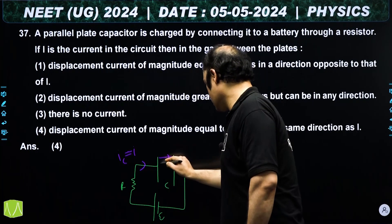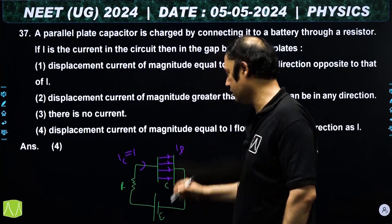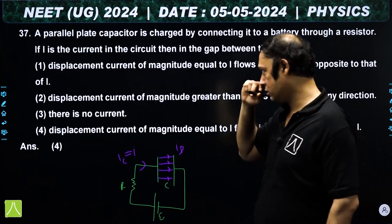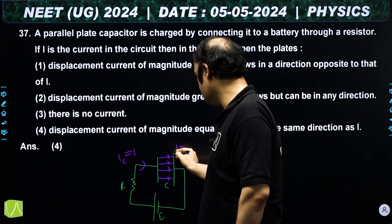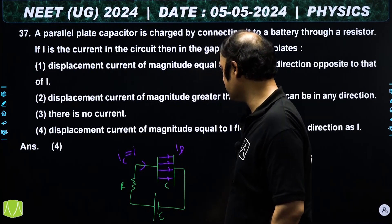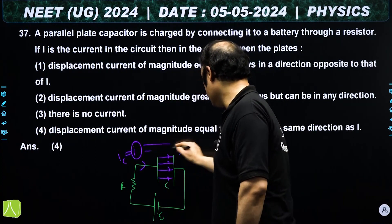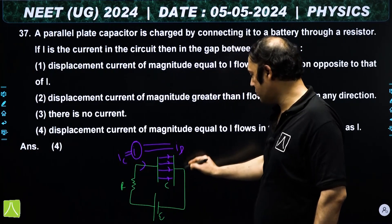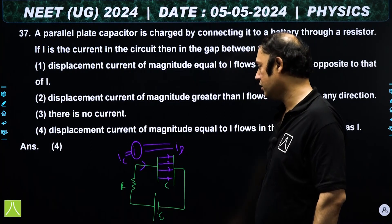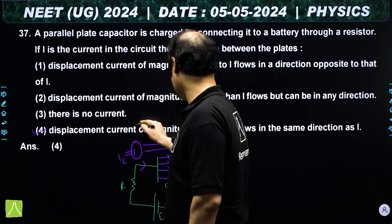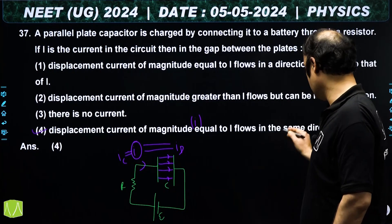At this instant, between the plates there will be displacement current. As studied in electromagnetic waves, whatever the conduction current is, the displacement current between the plates will have the same value and the same direction. So the fourth answer is correct.